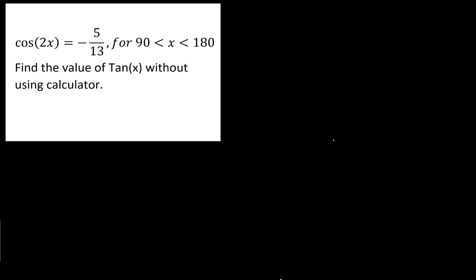Alright, so for cos(2x), all of us know cos(2x) basically we have 3 choices. We can do something like cos²x minus sin²x. But definitely, I will not choose this one because it makes me more complicated. Or we can choose something like 1 minus 2sin²x. Or 2cos²x minus 1.